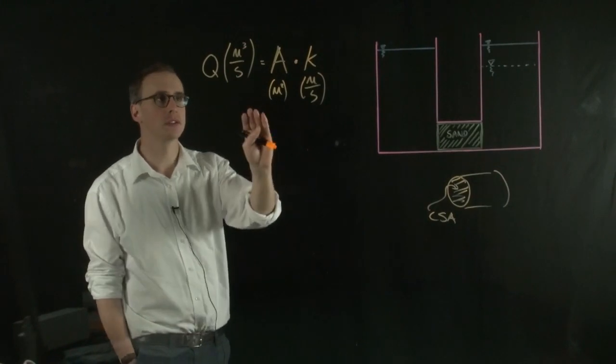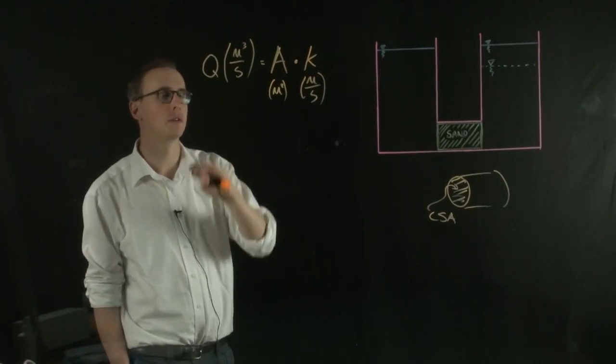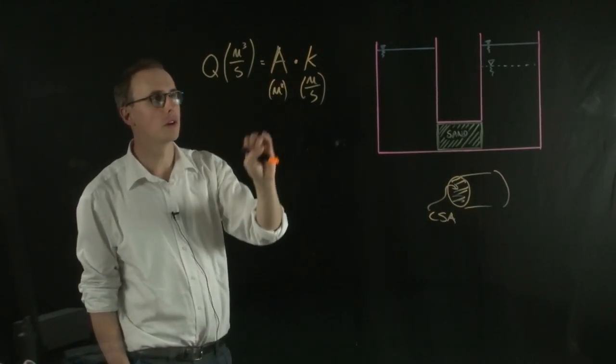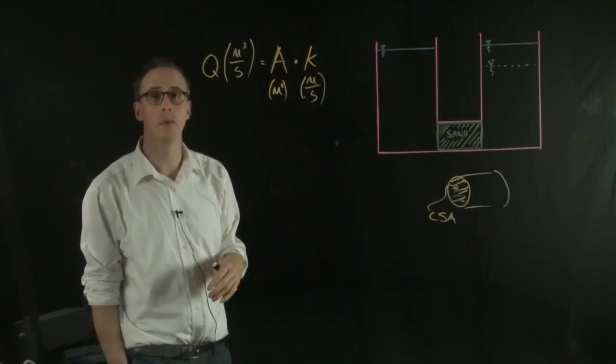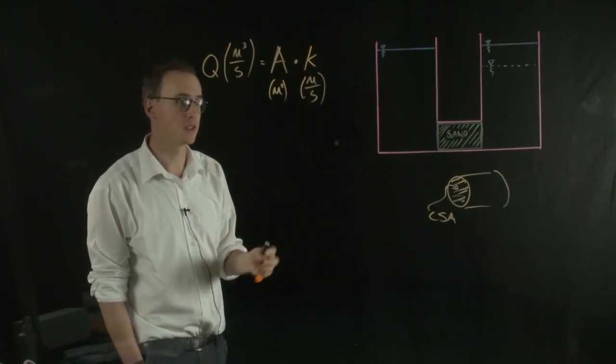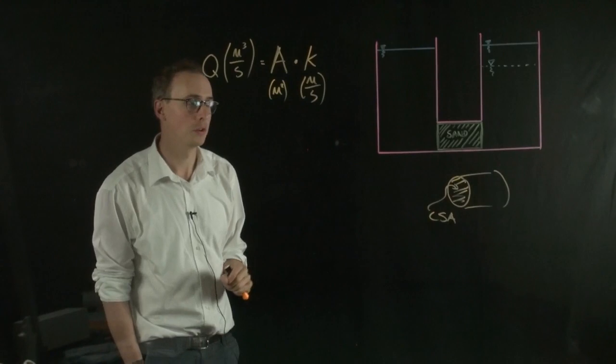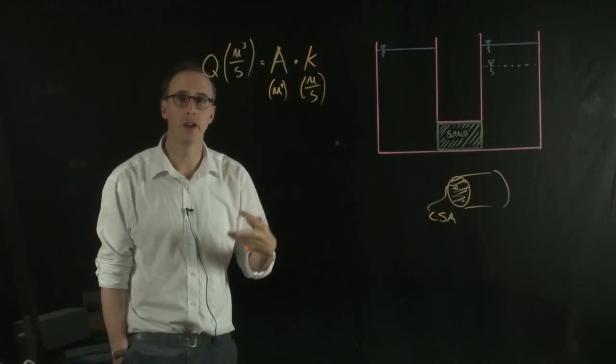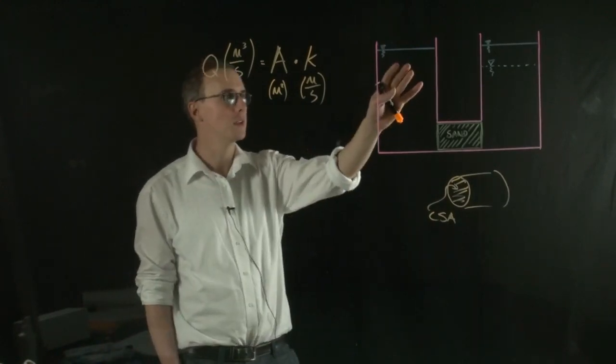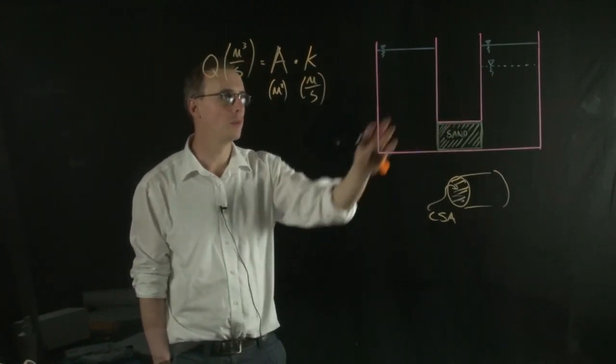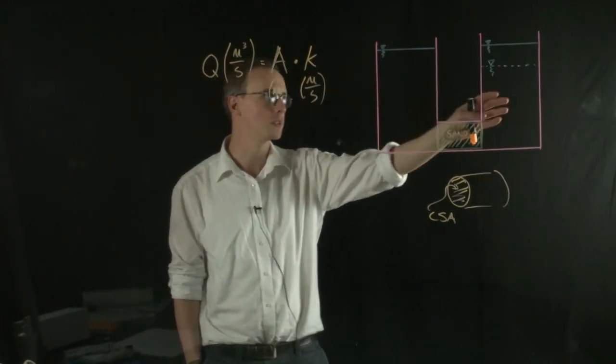So what this equation needs now is some sort of driving force to talk about flow. You can say that we've got a cross-sectional area and a permeability, and those are both specific to the soil that we're looking at. But we need a driving force. So what drives the flow of water from this side of the system to this side?